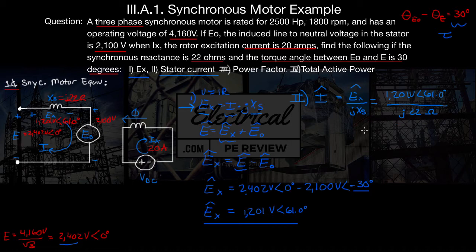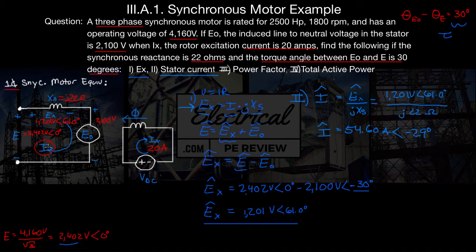This is complex math — we plug it into our calculator and solve for stator current I equals 54.6 amps at an angle of negative 29 degrees.